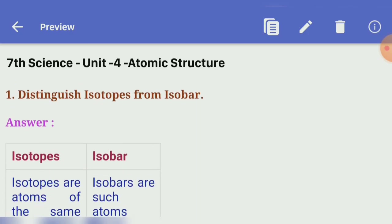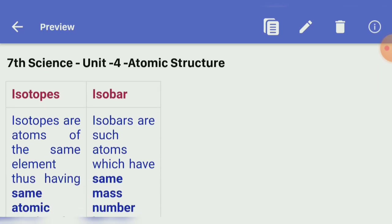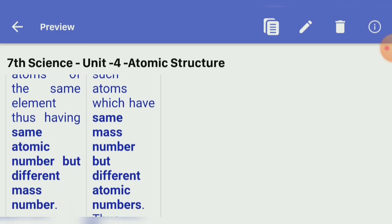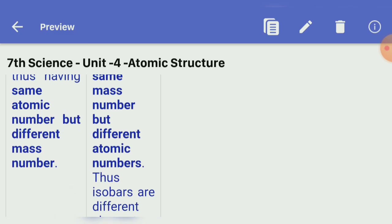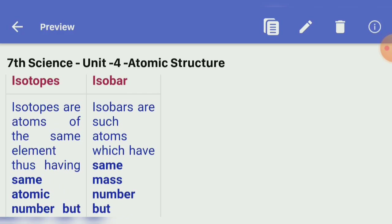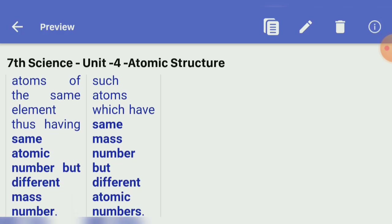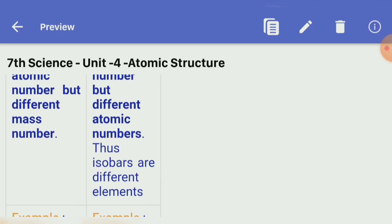Eighth section: Short answers. Distinguish isotopes from isobars. Isotopes are atoms of the same element, having the same atomic number but different mass numbers. Isobars are atoms which have the same mass number but different atomic numbers — thus isobars are different elements.